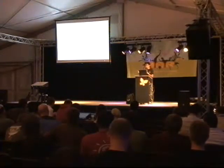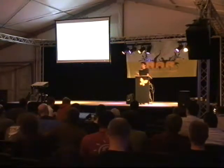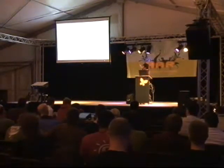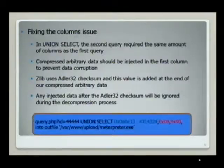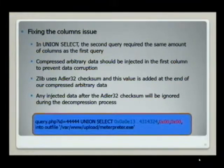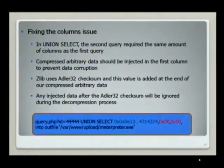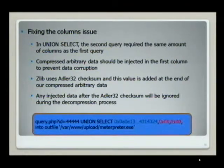After my UNION SELECT, that is my arbitrary data, which is my executable file. As already mentioned, in UNION SELECTs the second query requires you to have the same columns as the first query, and to prevent data corruption, your arbitrary data should be injected into the first column.